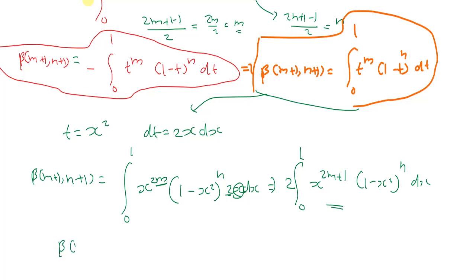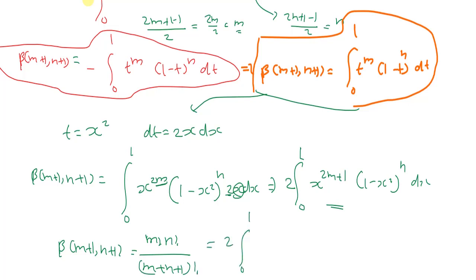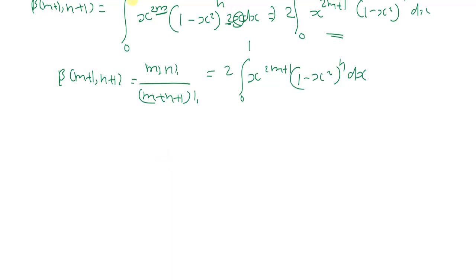So the result is: beta(m+1, n+1) = m! n! / (m+n+1)! = 2 times the integral from 0 to 1 of x^(2m+1) (1−x²)^n dx. This is another alternate form of the beta function.